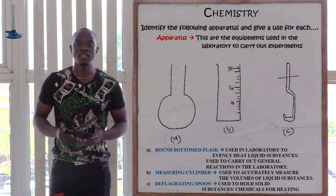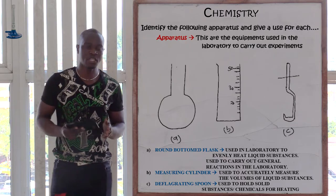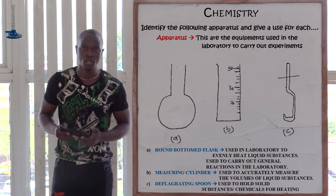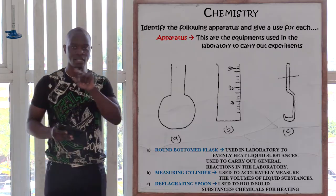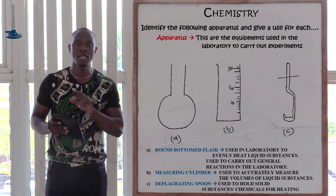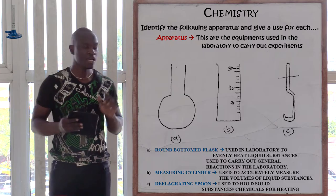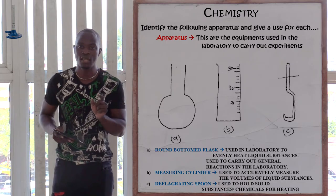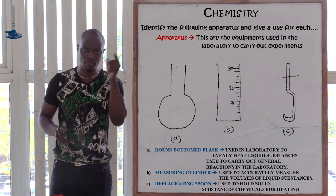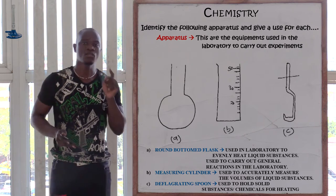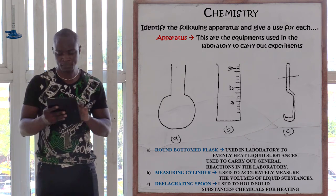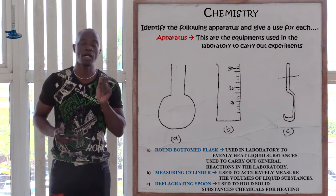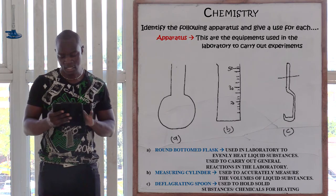Letter B we have the measuring cylinder. How will you differentiate between a boiling tube and a measuring cylinder in an exam? A boiling tube does not have readings — it is not marked and is just plain, without any marks representing centimeters cubed or ml. But if you see an apparatus that is marked, that represents a measuring cylinder.